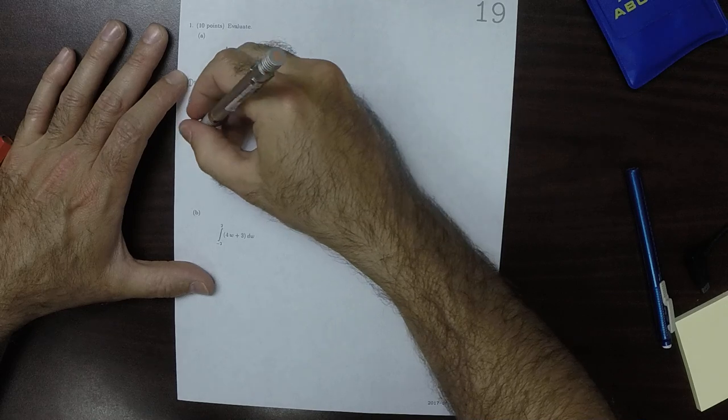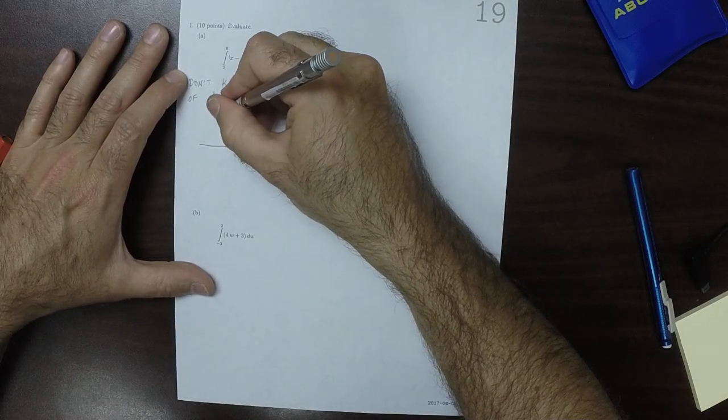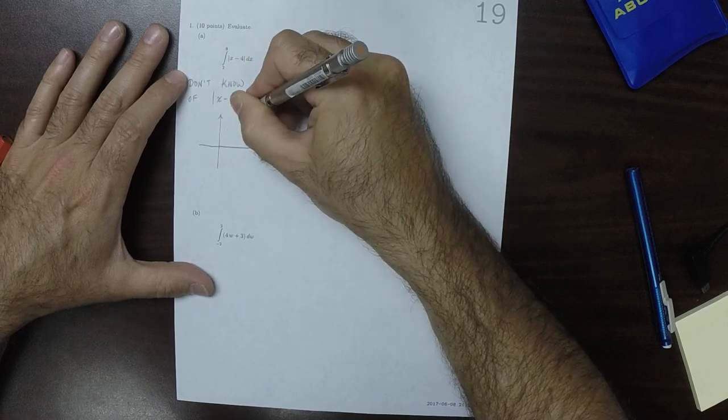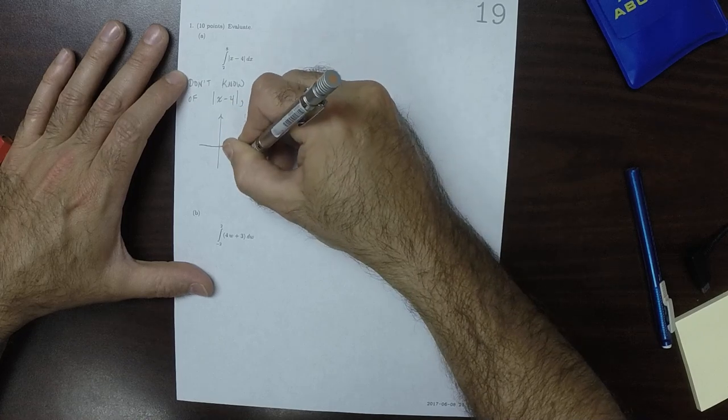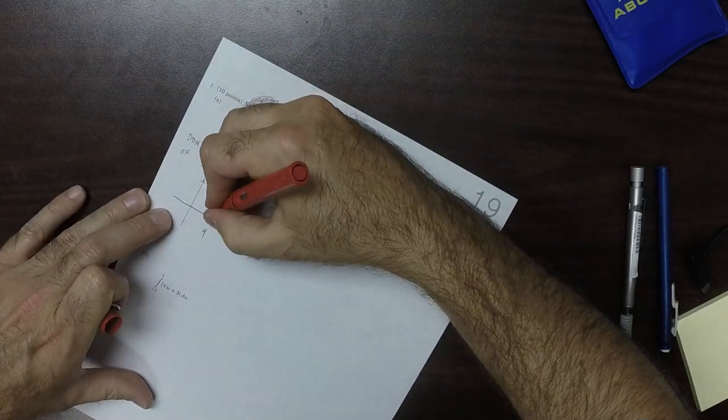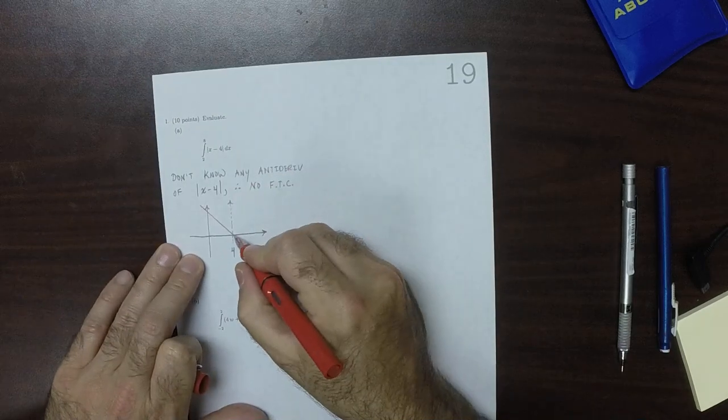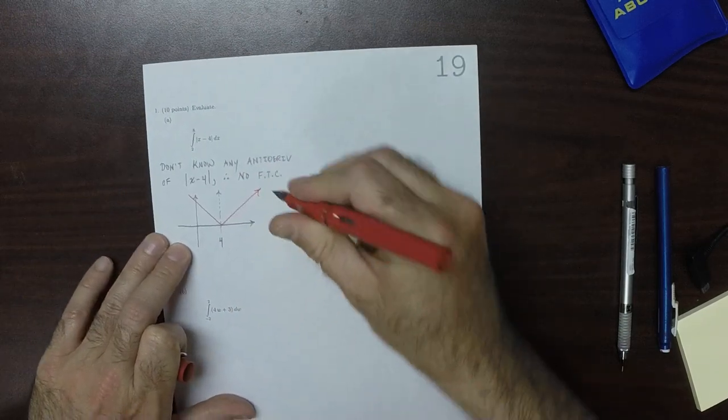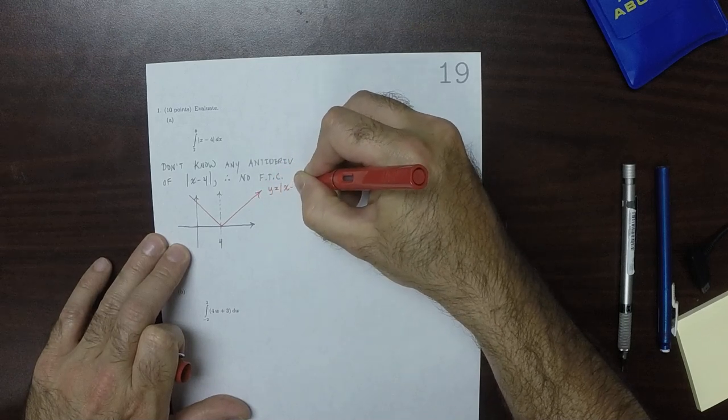So let's consider the plot of absolute value of x minus 4. It looks like this. So this is y equals absolute value x minus 4.